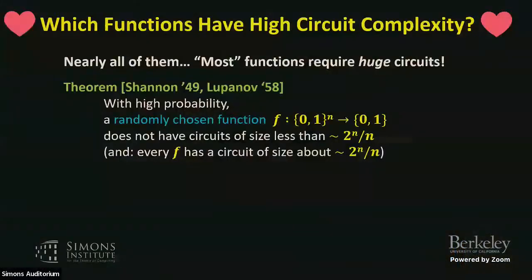I'll start with a question that many of us love: which functions have high circuit complexity? The first thing you learn about circuit complexity is that nearly all functions have high circuit complexity — most functions require huge circuits. With high probability, a randomly chosen function doesn't have circuits of size significantly less than 2^N / N. And Lupanov showed every function has a circuit of size about 2^N / N, omitting a (1 + o(1)) multiplicative factor.